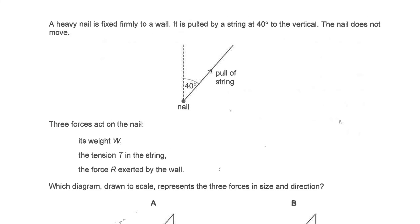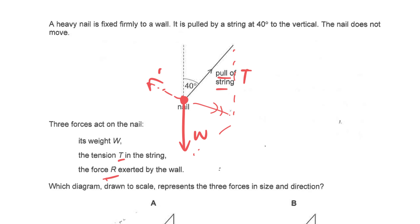For the last question, there's a heavy nail fixed firmly to the wall — it's stationary. By Newton's first law, the three forces acting on the nail are balanced and the net force is zero. The string provides tension T, and the weight W acts vertically downward. The resultant of T and W must point somewhere to the right, so the reaction force R from the wall must point left to counterbalance it.